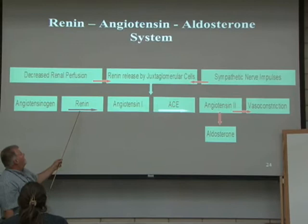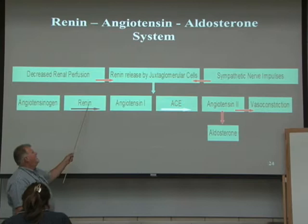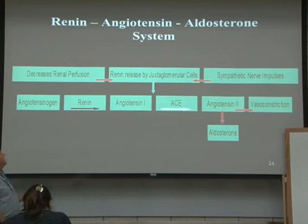We just finished this last time. Renin is released by what cells? Juxtaglomerular cells, right. What happens is juxtaglomerular cells release renin when we get a decrease in blood flow to the kidney.